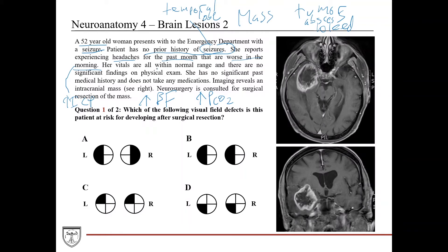Her vitals are within normal range and there are no significant findings on physical exam. She has a normal temperature, which decreases suspicion for an infectious cause such as an abscess. She's also hemodynamically stable, and the absence of findings like weakness or facial droop makes a stroke less likely, though doesn't totally rule it out. She has no significant past medical history and takes no medications, which makes medication-related seizures or hypoglycemia from insulin less likely.